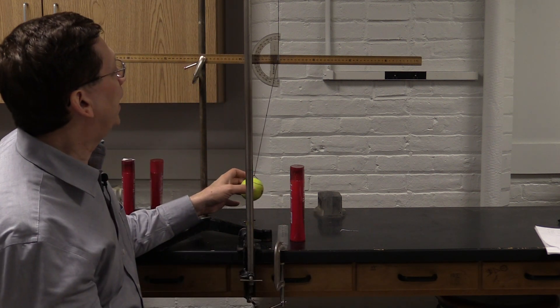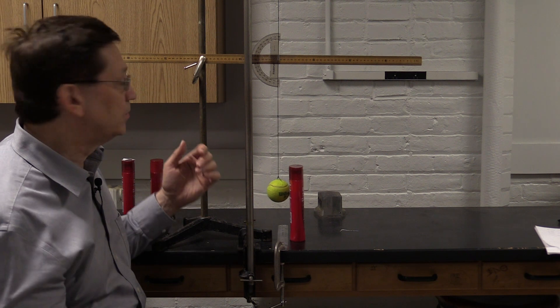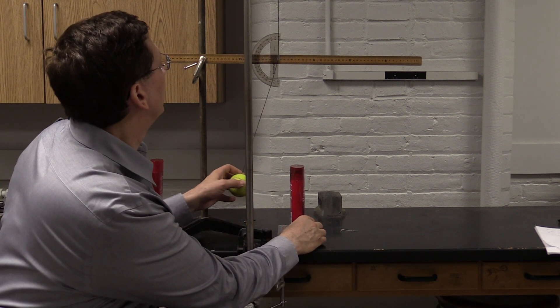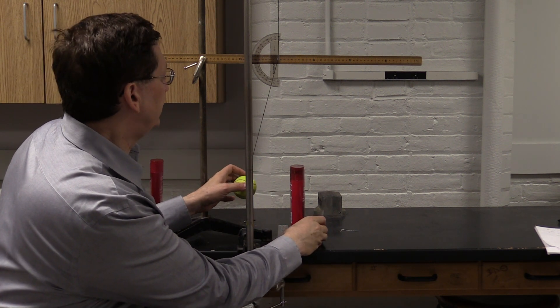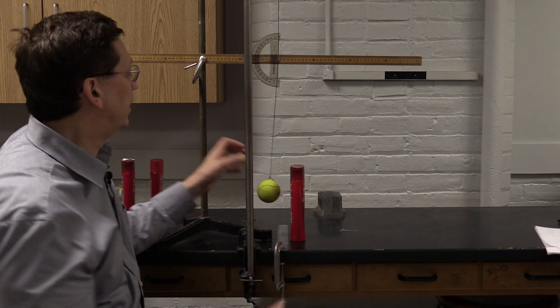You can see that for an angle of 10 degrees, nothing happens. It just bounces back. For an angle of 15 degrees, the bottle's still stable.